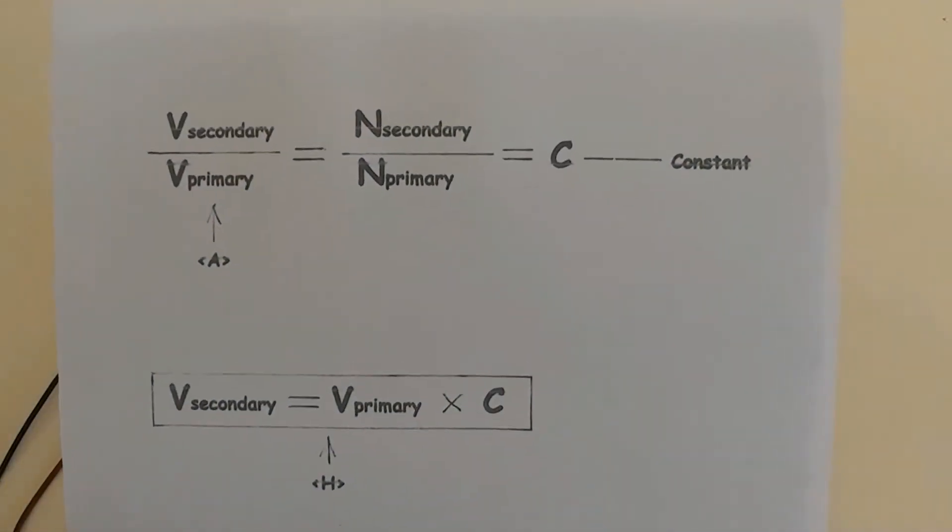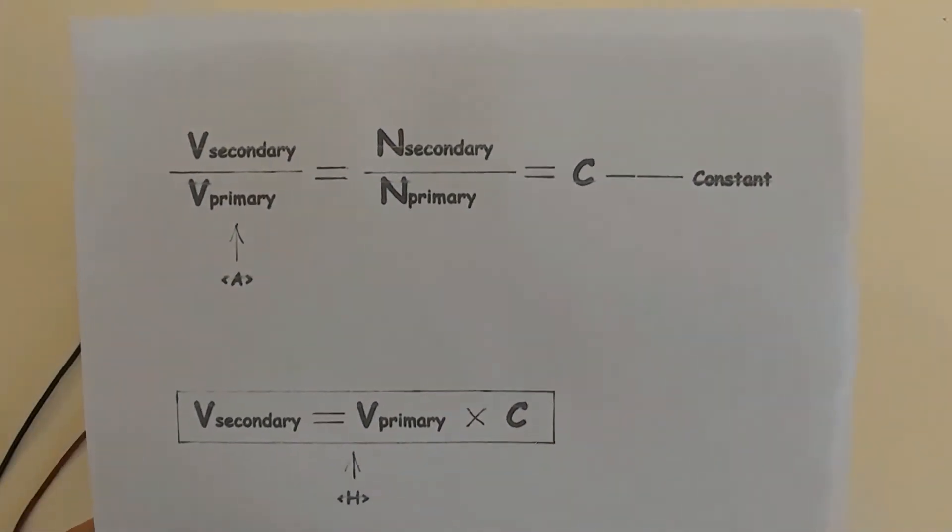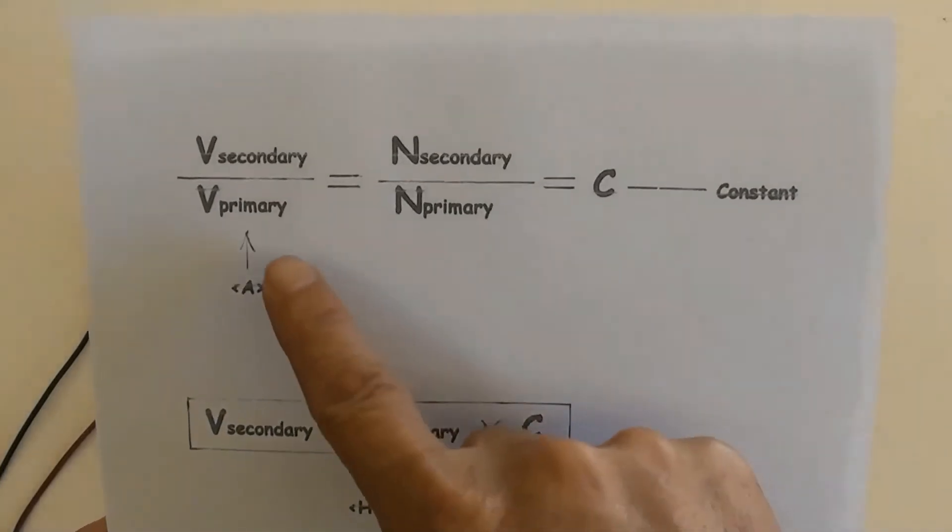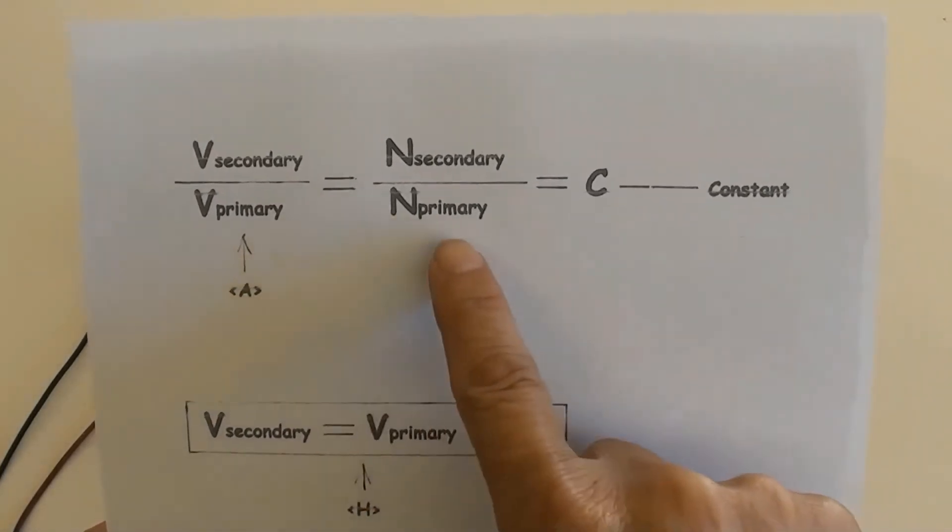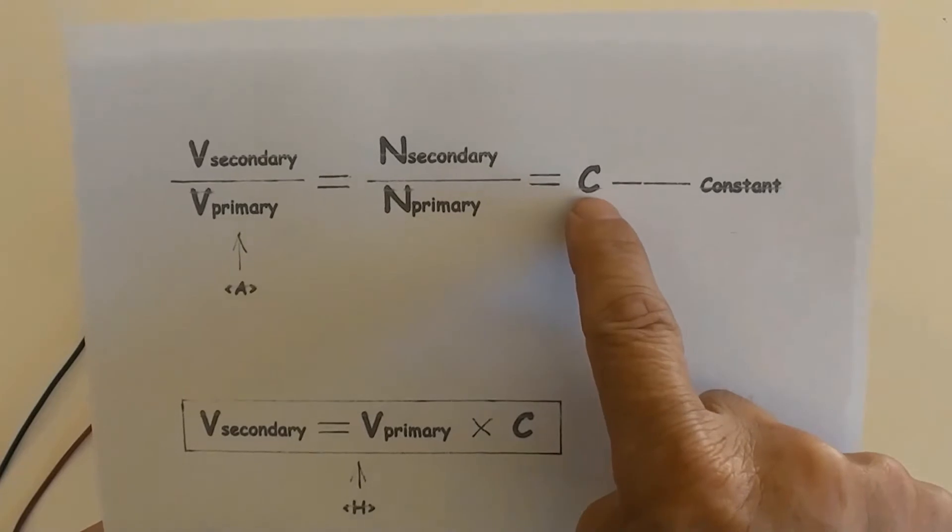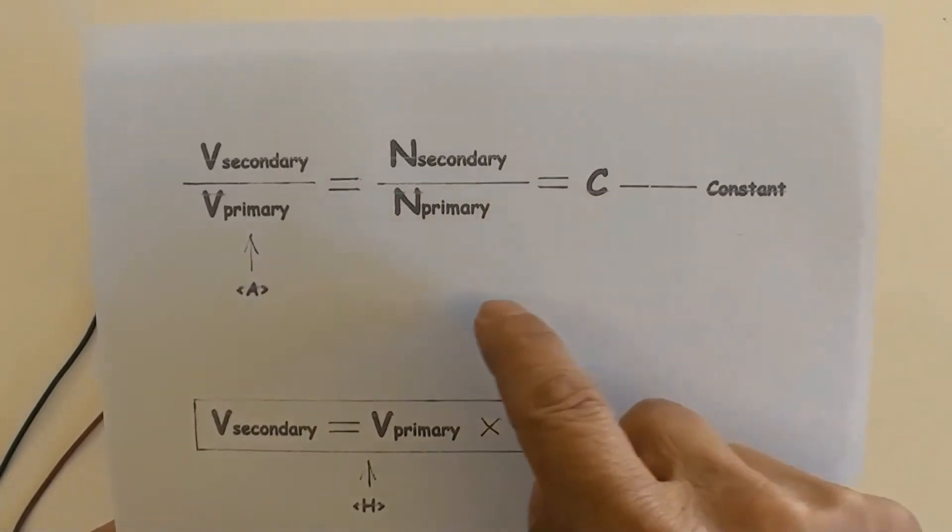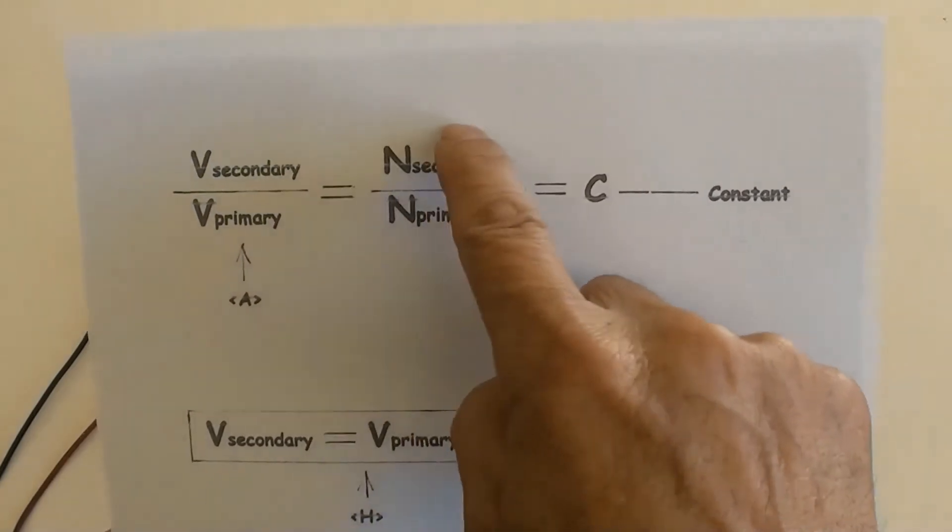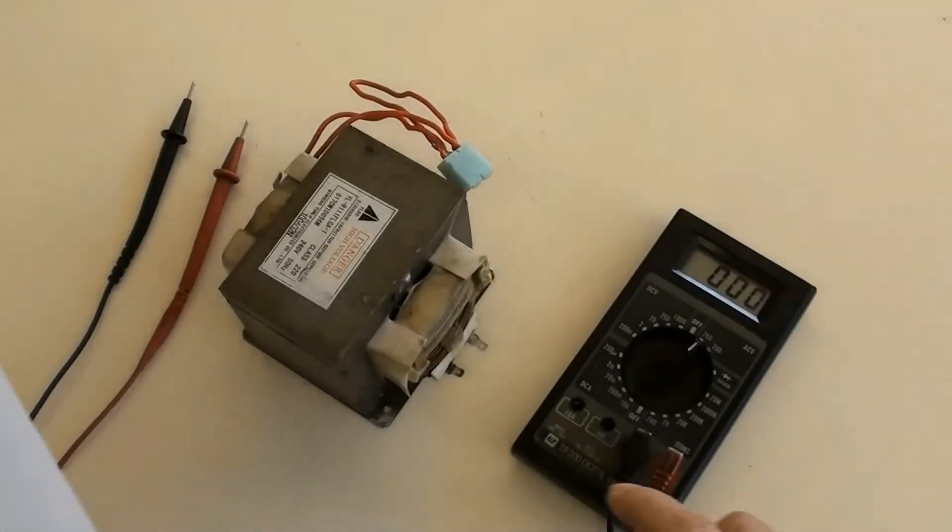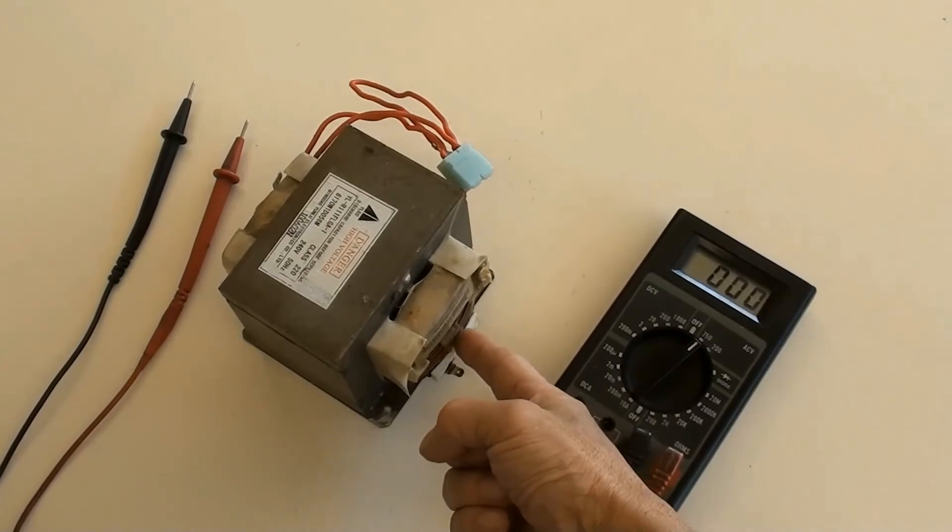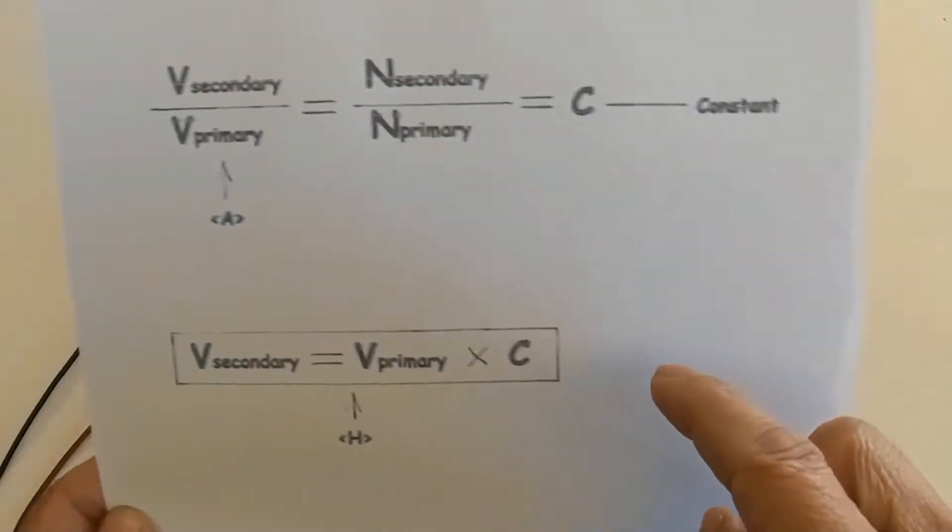According to the transformer formula, V secondary over V primary equals N secondary over N primary equals C, where C is a constant. For a particular transformer, its primary and secondary windings are fixed, so C is fixed.